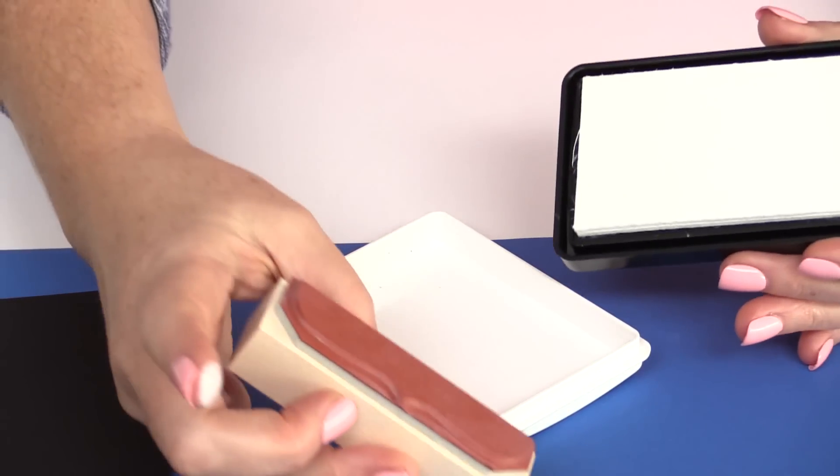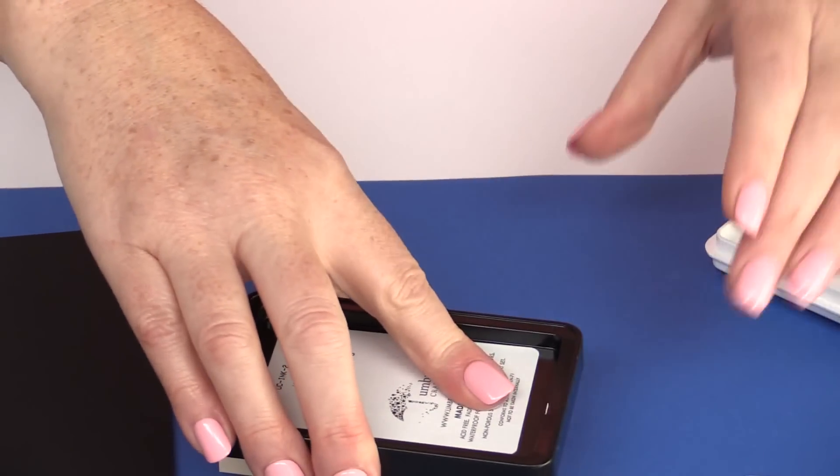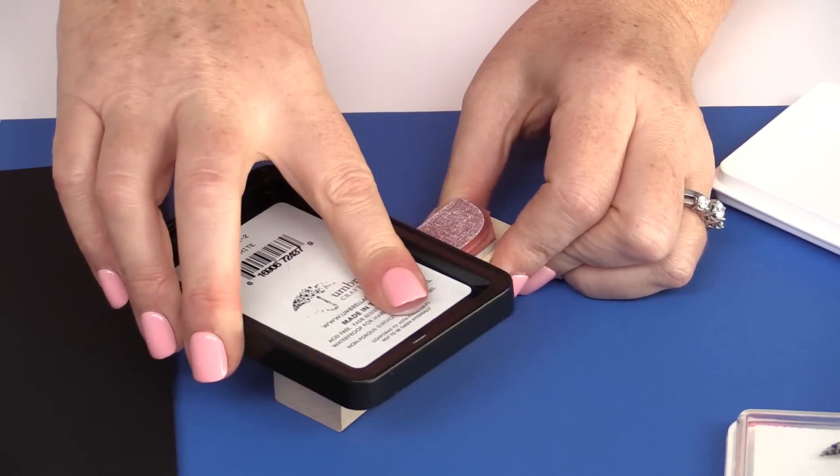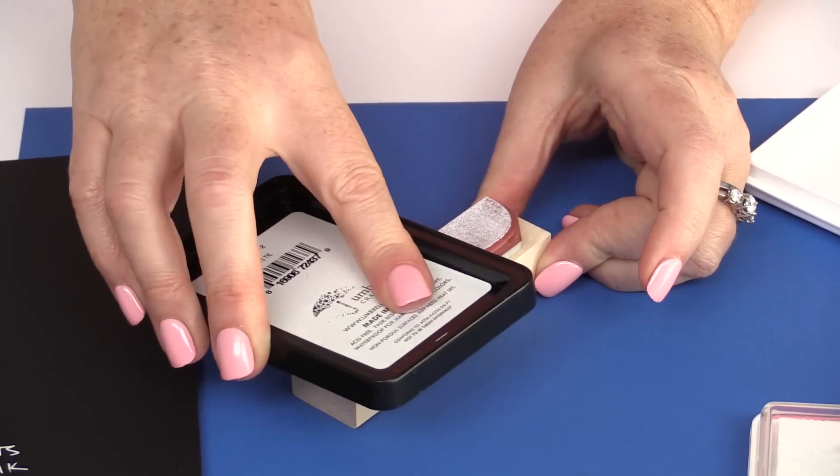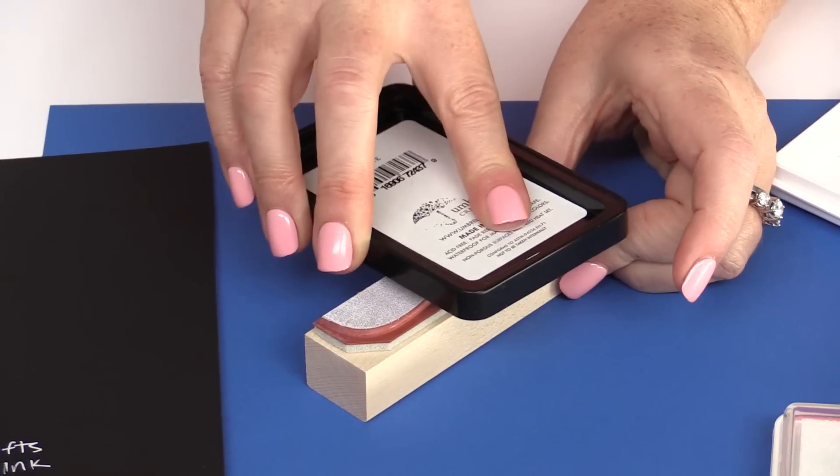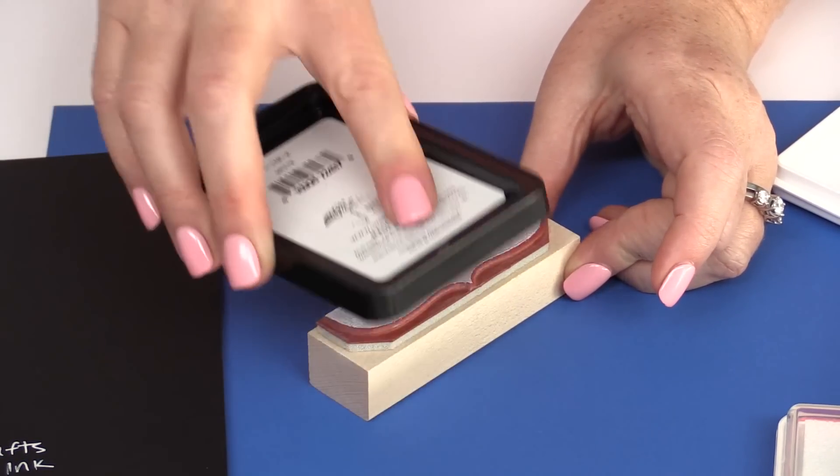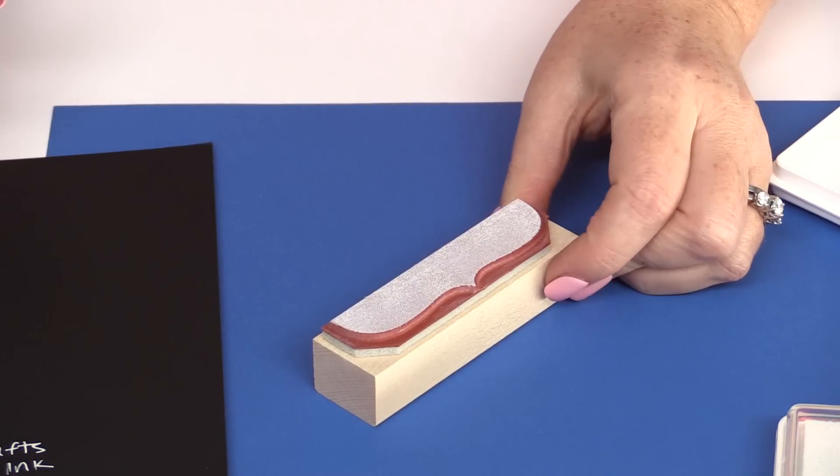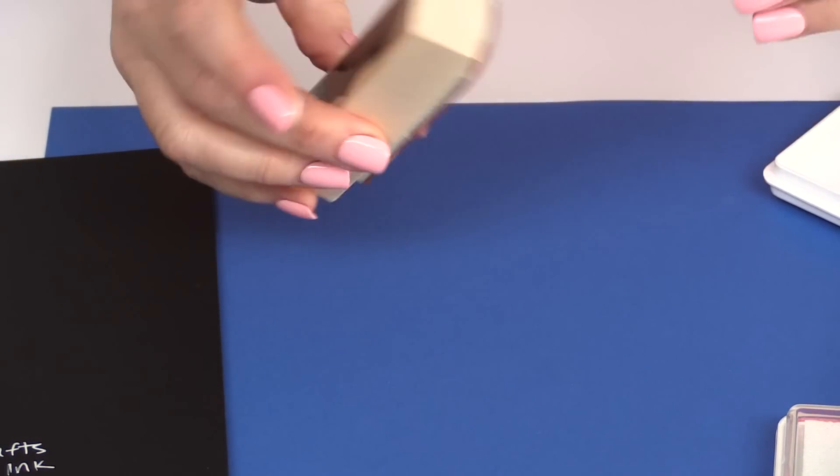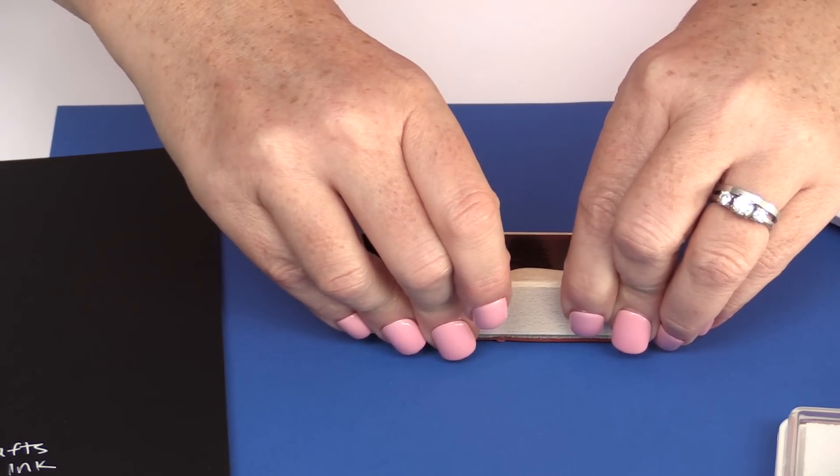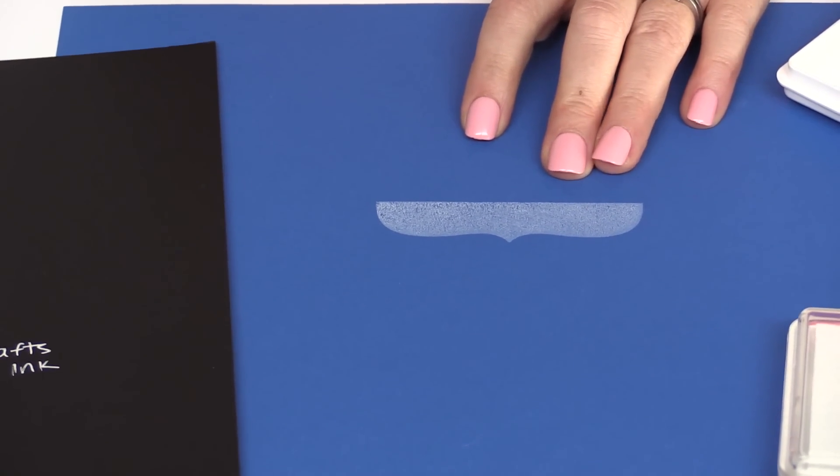We're going to ink up this stamp and stamp on the blue paper here. You want to make sure that you're really covering your stamp. You can see there it's nice and covered with the white dye ink, and it gives a really pretty impression.